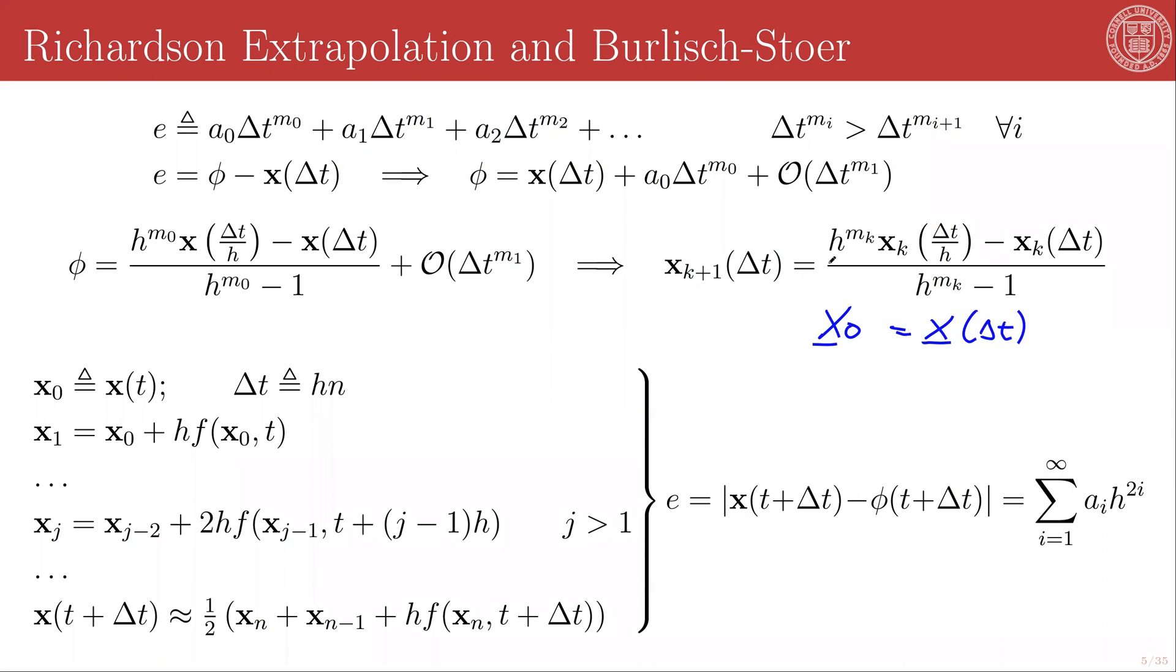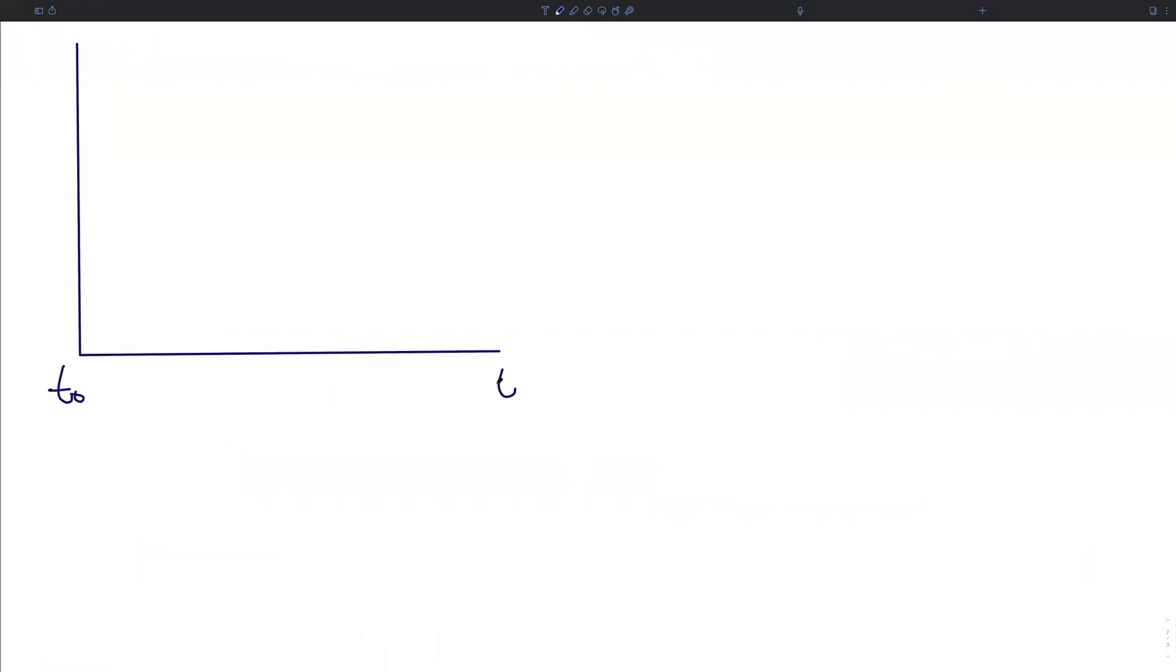So this all feels very abstract. I personally find it helpful to draw a visualization of what this is doing for us. We're thinking here specifically about the propagation between sometime T_0 and T_0 + Δt. If we take that h value to be equal to 2, we are just taking a single step between these.